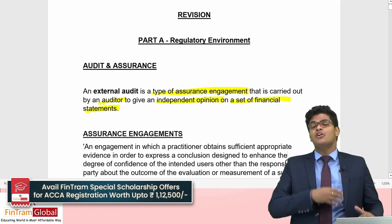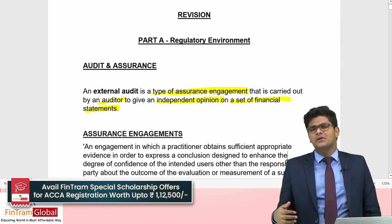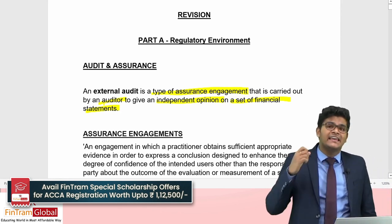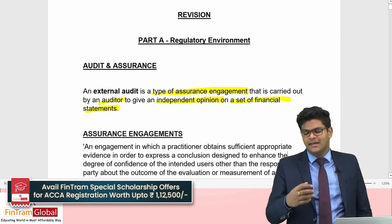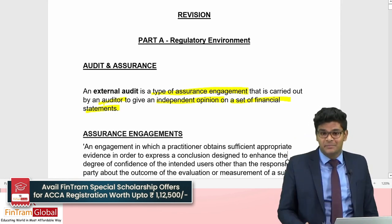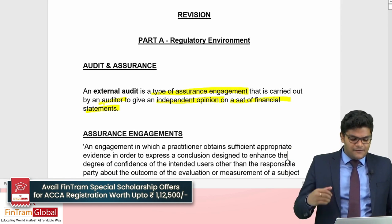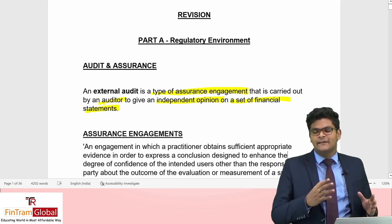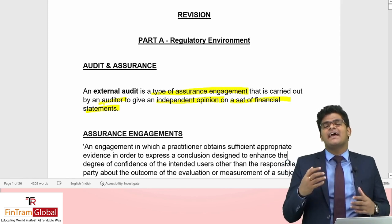The auditor provides their opinion on the financial statements of an organization. The opinion is provided for the intended users of the financial statements, who are primarily the shareholders or investors, but also include other stakeholders such as employees, the government, and the community. Moving on, external audit is a type of assurance engagement — so what is an assurance engagement exactly?